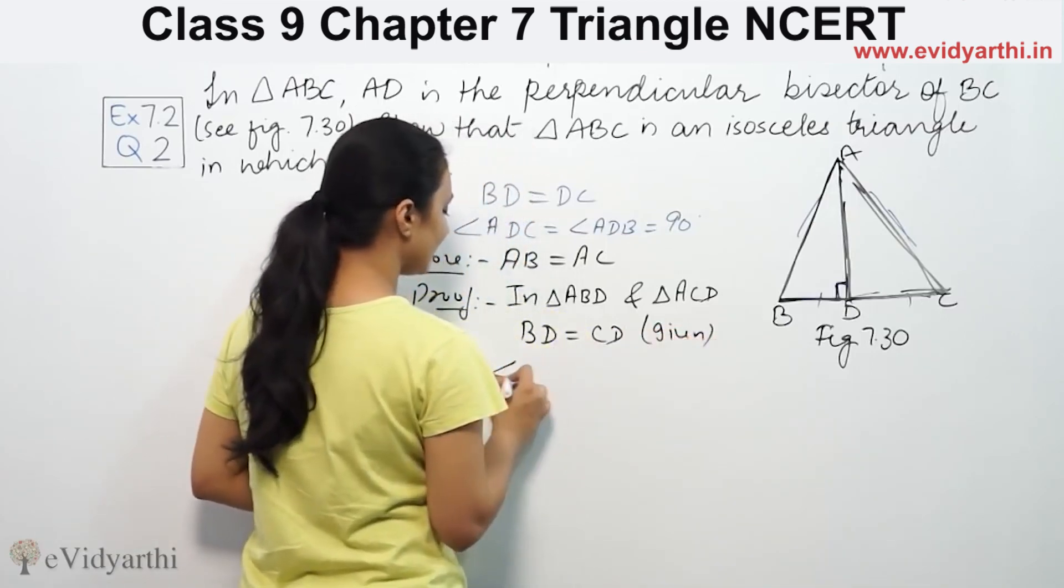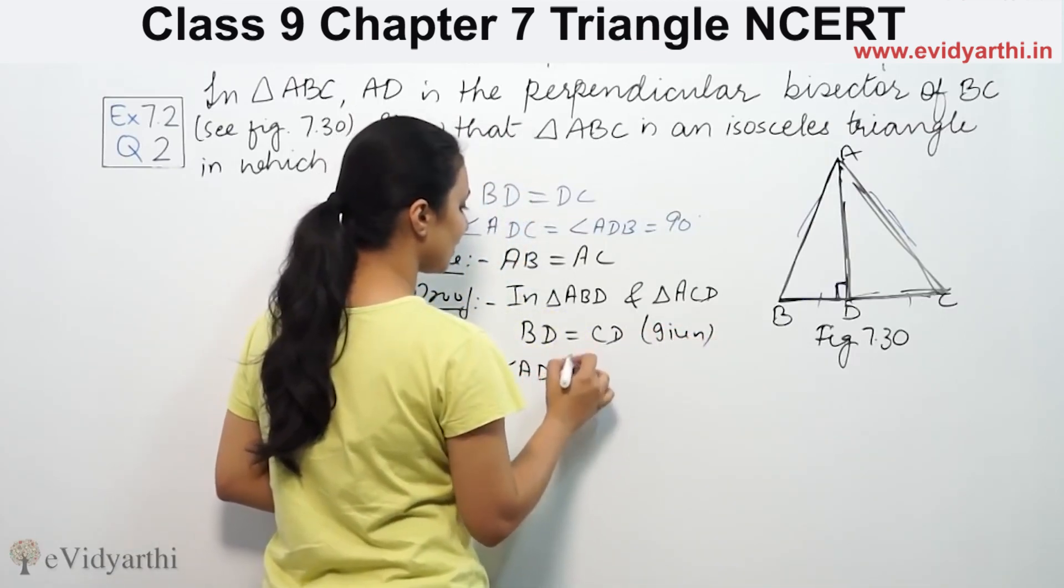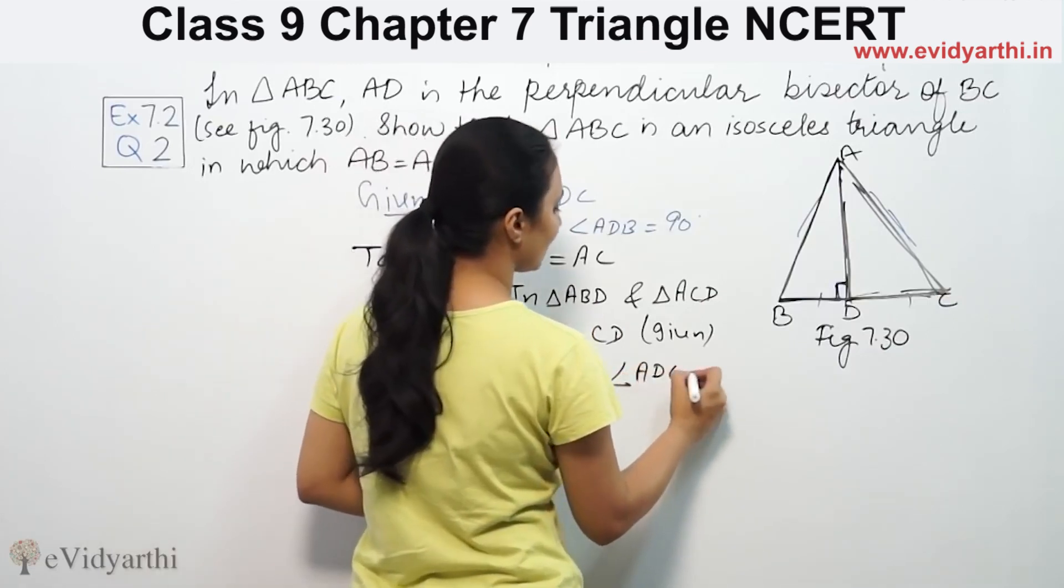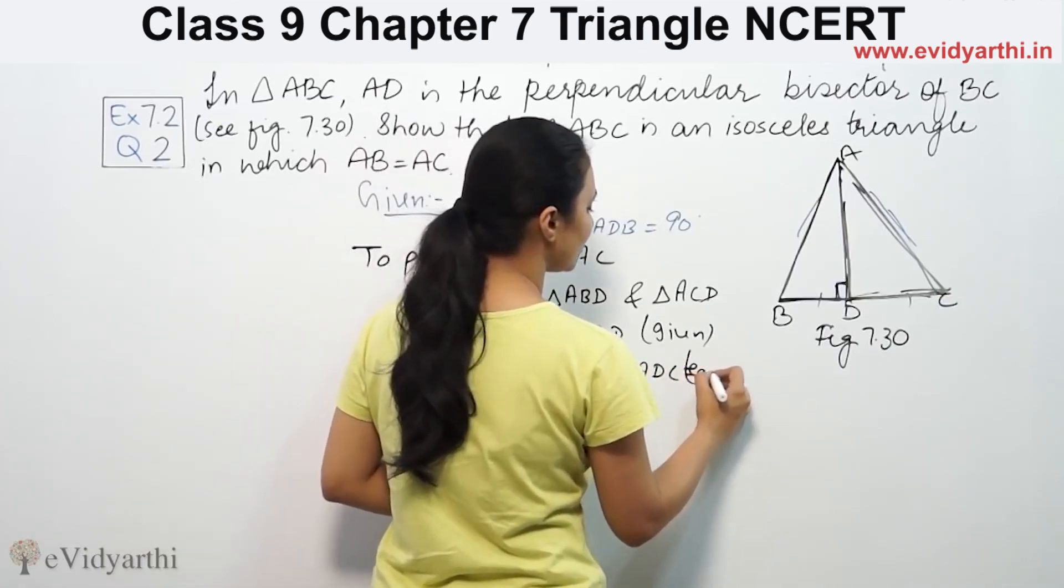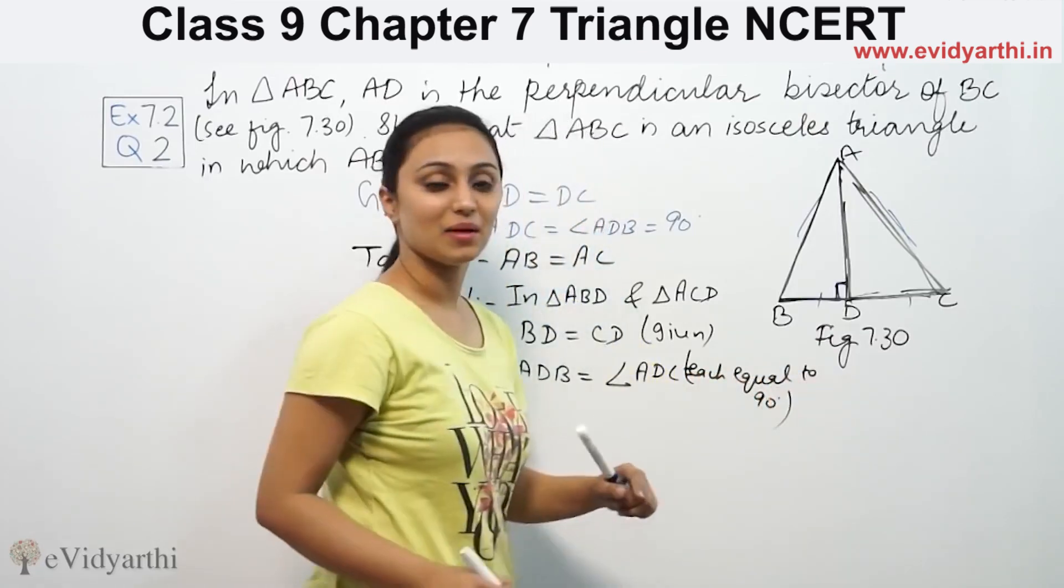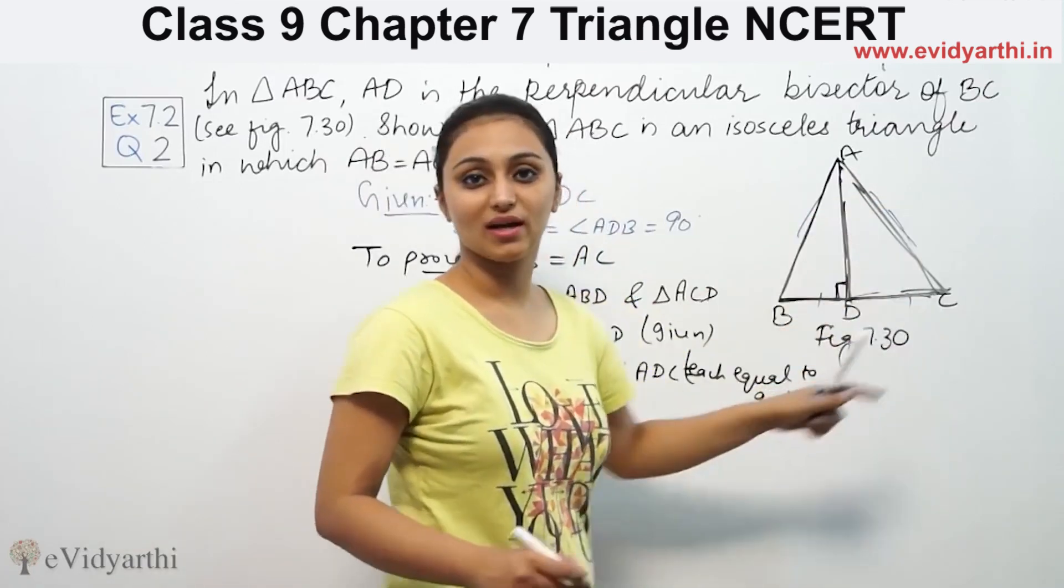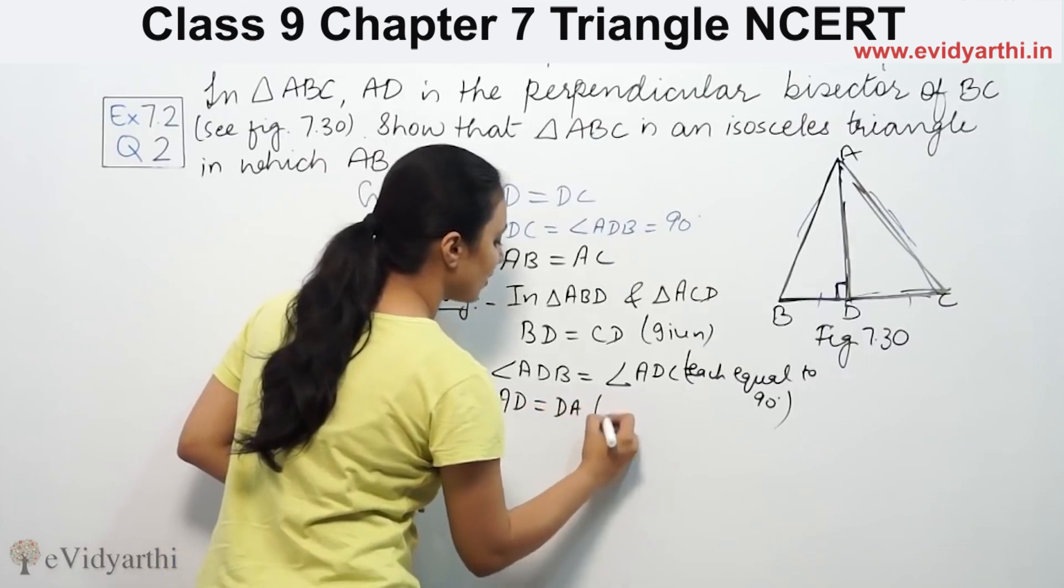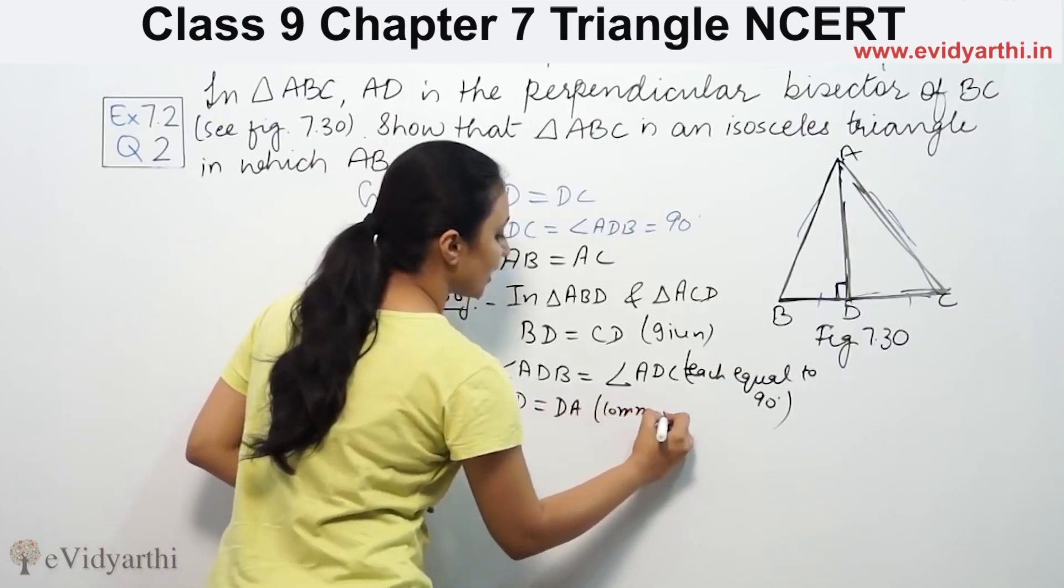BD is equal to DC, and angle ABD is equal to angle ACD. And angle ADB is equal to angle ADC is equal to 90 degrees.